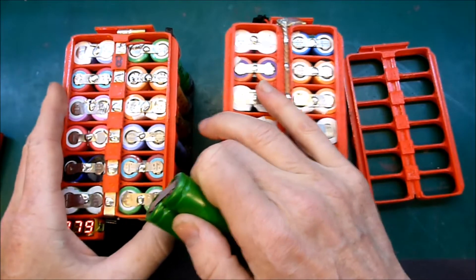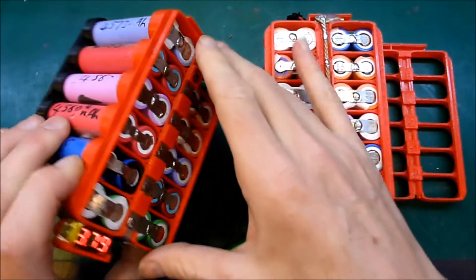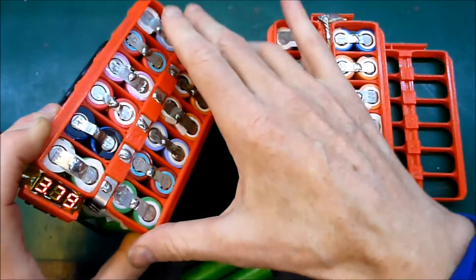So to solve that problem, and because I had a 3D printer, I designed this battery holder and I print it in black for the negative side and red for the positive side.